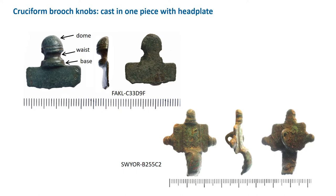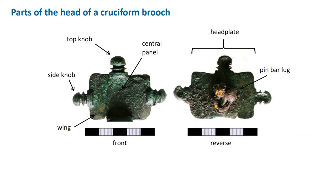For knobs cast in one with the head plate, we call the rounded part the dome, the broad groove below that the waist, and below that the base. The rest of the head apart from the knobs is the head plate, usually divided into a thicker raised central panel and flatter wings, though sometimes the head plate is just a simple rectangle. There are often vertical lines of small stamps or punch marks down the edges of the wings or central panel — look hard for these as they can get worn off. On the reverse there is usually a single pin bar lug, occasionally a double, always set longitudinally in line with the pin.